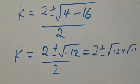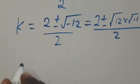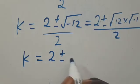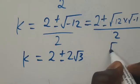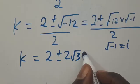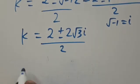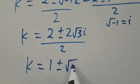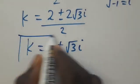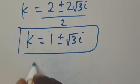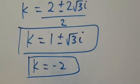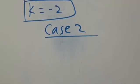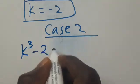This simplifies to k equals 2 plus or minus the square root of minus 12, divided by 2. We also have another solution here, but this is a complex solution. The first real solution remains k equals minus 2. Now let us recall Case 2, where we have k to the power of 3 minus 2 to the power of 3 equals 0.